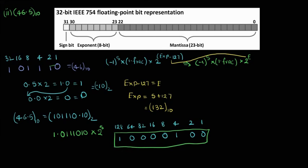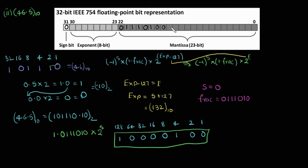The sign bit is 0 since it is a positive number. The fraction is what comes after the binary point in the normalized form: 01110100. Now let's fill up the 32-bit word: sign bit is 0, fraction is 01110100 followed by zeros, and the exponent is 10000100. This is the required IEEE representation of 46.5.